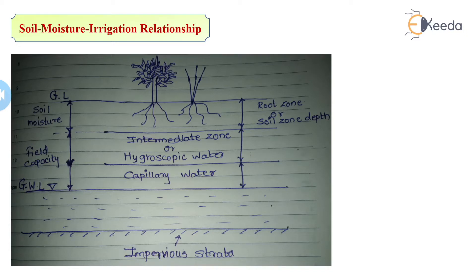Why does this happen? Because of molecular attraction. You have already studied this in fluid mechanics — in the properties of a fluid, one of the properties is surface tension. This phenomenon works in the soil moisture irrigation relationship. Through this capillary zone, if we sow the crop on the low-lying area, we can get sufficient water for the maturity of the crop.